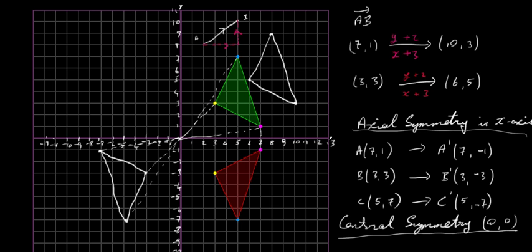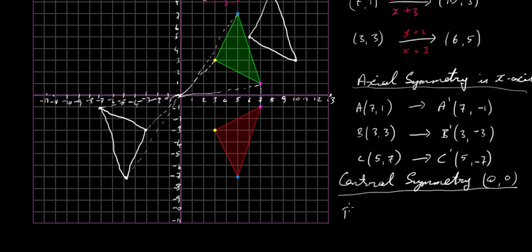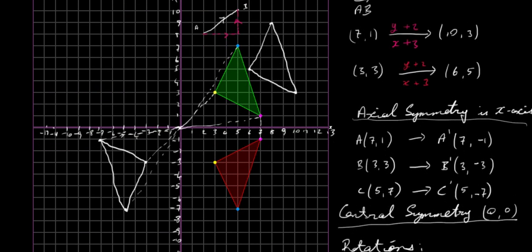Now let's look at rotations. You can rotate a triangle in a clockwise or anti-clockwise direction. Anti-clockwise is the positive direction and clockwise is the negative direction. When measuring an angle from the x-axis, going anti-clockwise is plus 45 or plus 90 degrees, while going clockwise is minus 45 or minus 90 degrees. The same applies to rotations — rotating anti-clockwise is a positive rotation. We're going to rotate 90 degrees anti-clockwise.